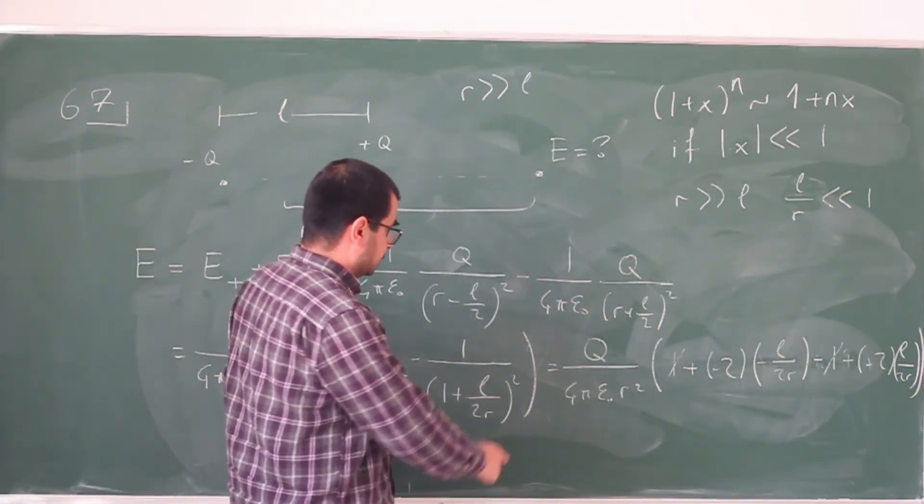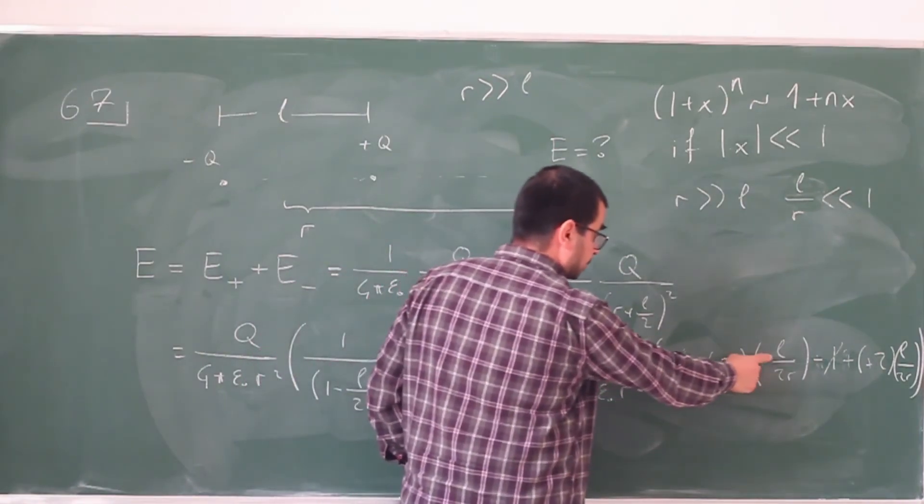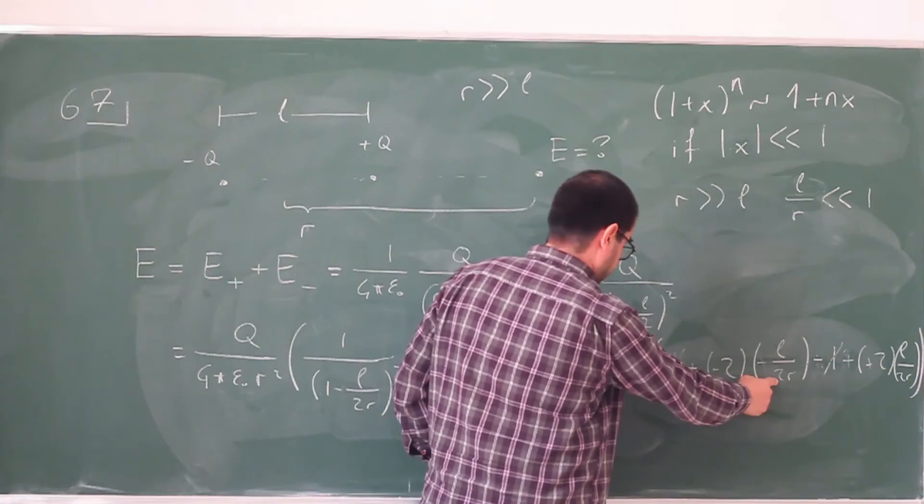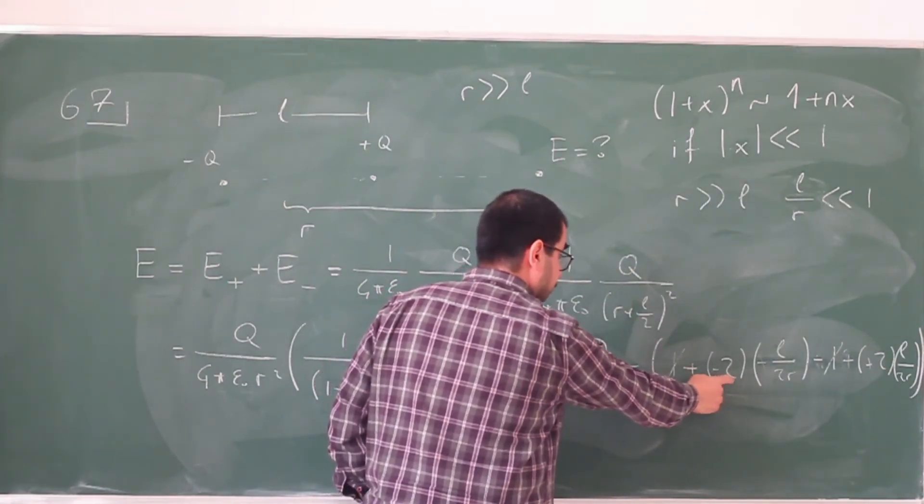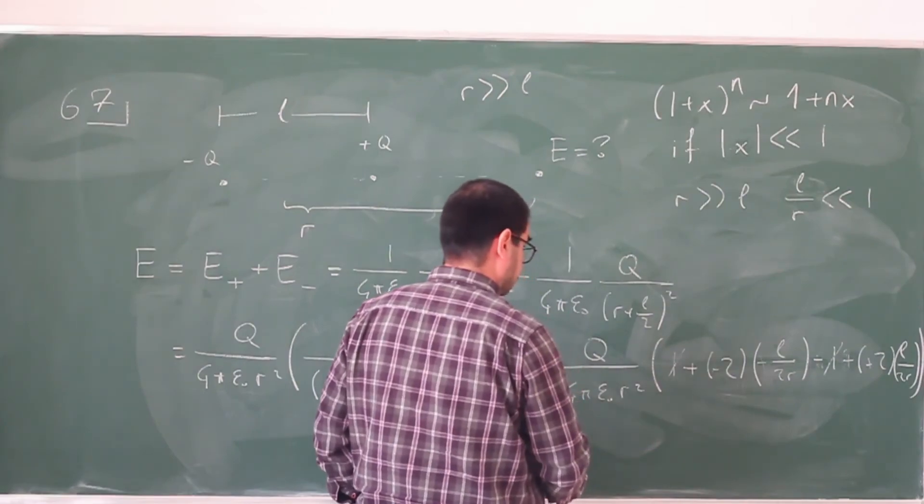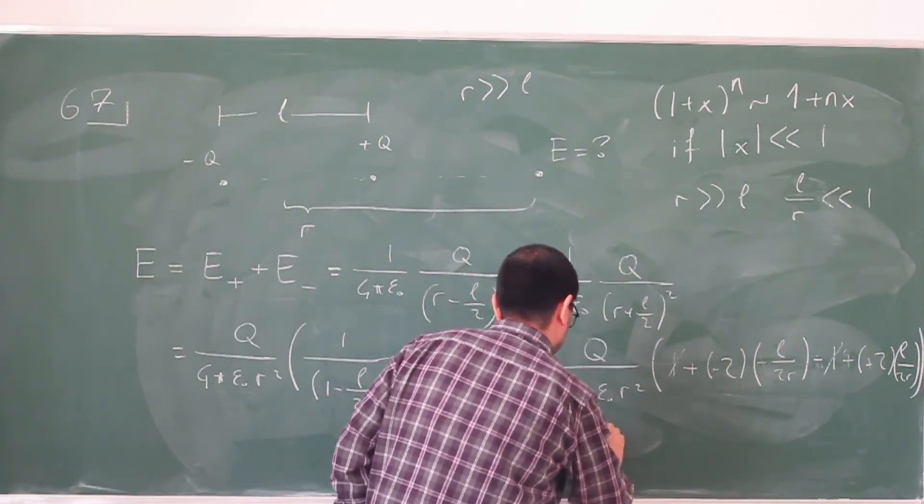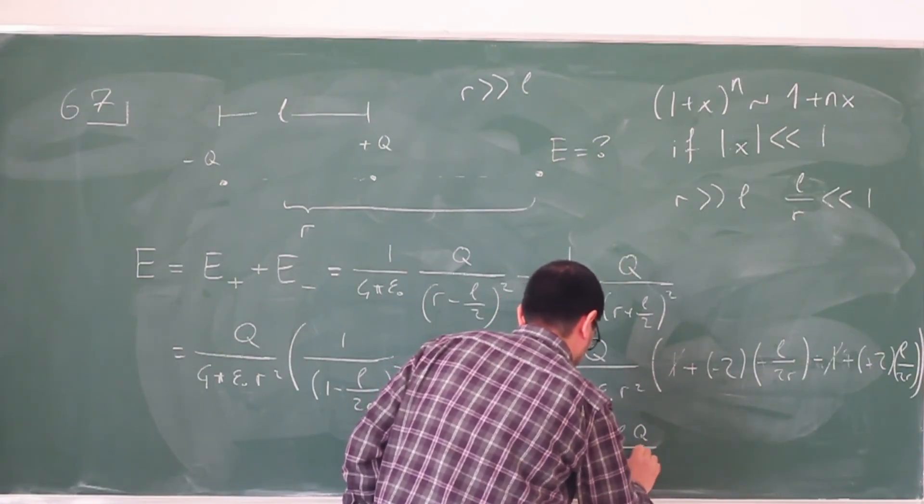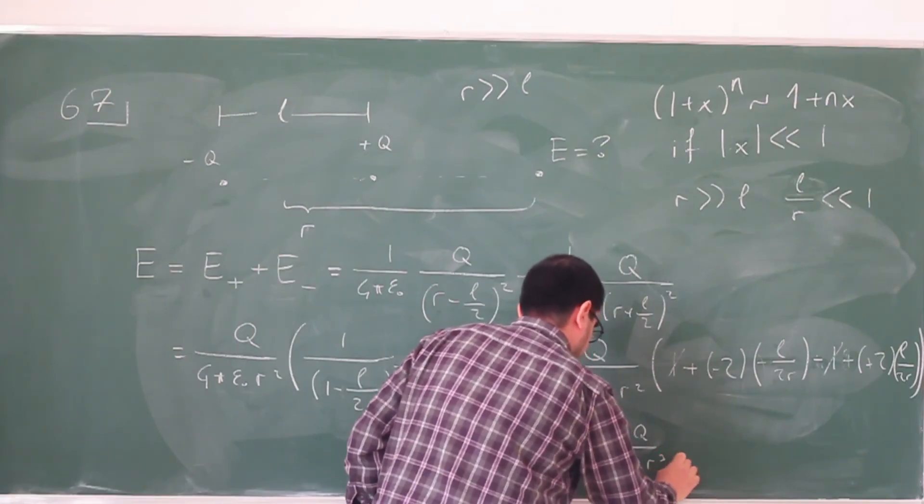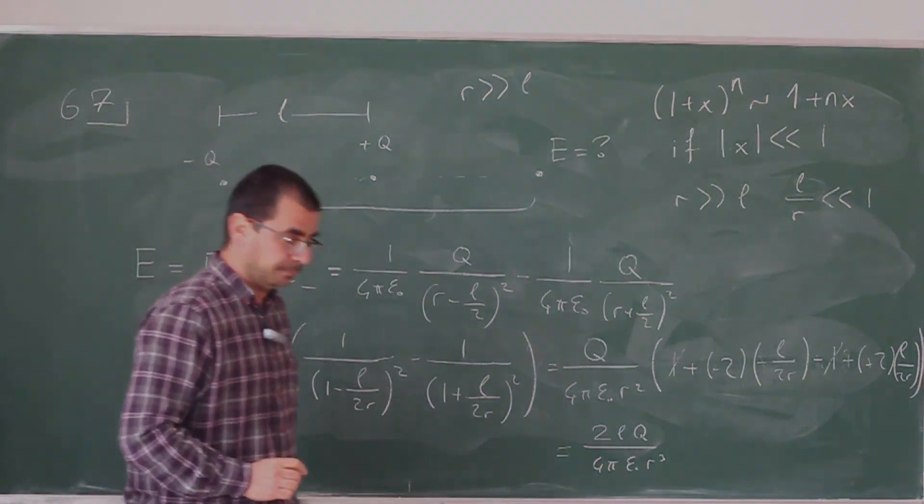All right, so what I get is q over 4π epsilon naught r squared times, oh sorry, 4 times L over 2r. There's a 2 coming from here, 4 times L over 2r, that's 2L over r. And so this is going to be 2Lq divided by 4π epsilon naught r cubed, which is of course what's required in the problem.